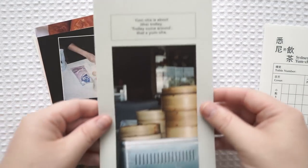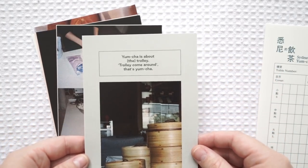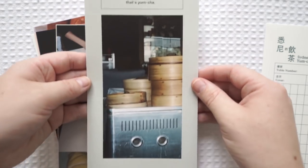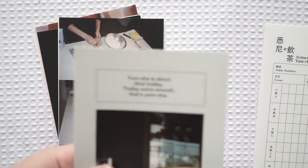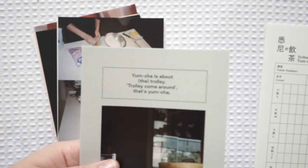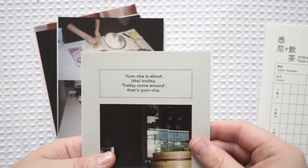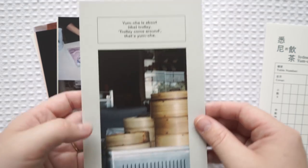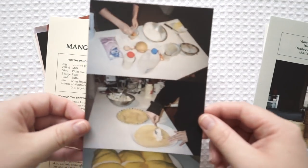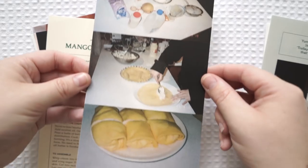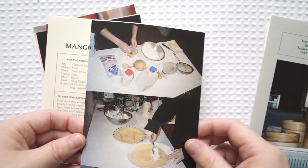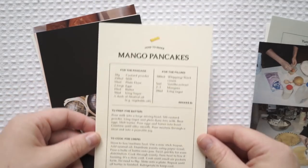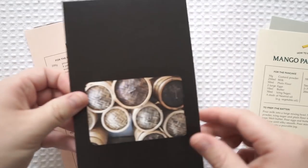So the first one says Sydney's Yum Cha with a little address here. And then as you can see, I think this is her photography. I don't know a lot about the artists, but I thought this was very cute. The back's just plain. And then at the top, you can see Yum Cha is about the trolley. Trolley come around, that's Yum Cha. I thought that was really cute and I really like the photography. Again, more beautiful photography making Yum Cha. And then the thing that I love about this is it comes with recipes. I was so excited. I'm going to have to make some of these and then more photos.